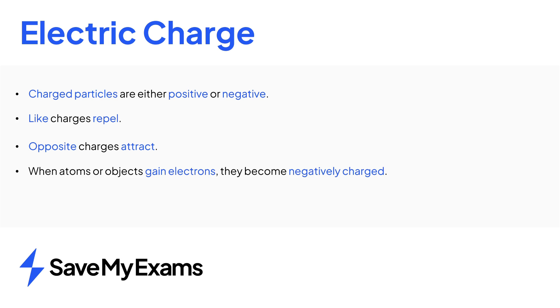When atoms or objects gain electrons they gain negative charge and therefore they become more negative, they become negatively charged. When atoms or objects lose electrons they lose negative charge, therefore they become less negative, they become positively charged.